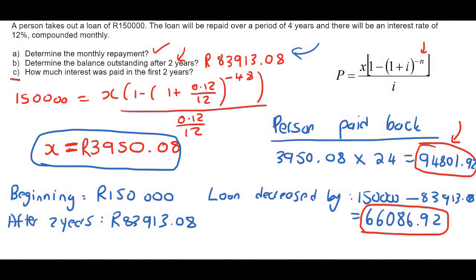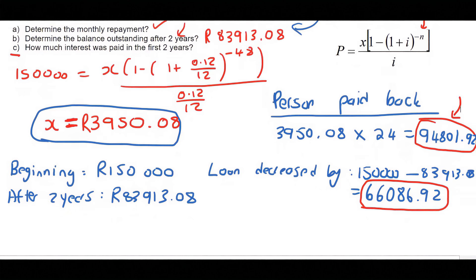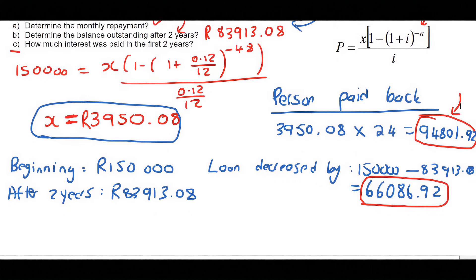Ah, but that would be if there was no such thing as interest. So, the person has paid back 94,000 Rand, but the loan only went down by 66,000 Rand.